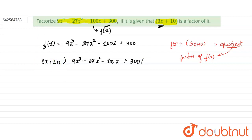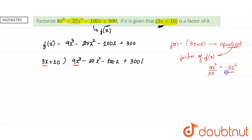How do we divide this polynomial? We take the first element of the polynomial and the first element of the factor and divide them both. So 9z cube by 3z gives us 3z square. This will be the first element of the quotient, that is 3z square.